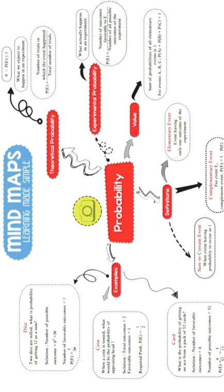There are two types of probability. The first type is experimental or empirical probability. Experimental probability means what actually happens in an experiment. For example, if you toss a coin or throw a die, what outcome comes — what you are getting — that is called the actual happening. The experimental probability can be given by the formula: P(E) = number of outcomes favorable to event E, divided by number of all possible outcomes of the experiment.